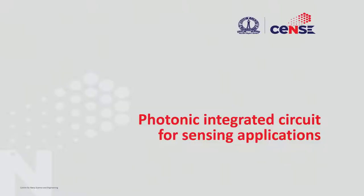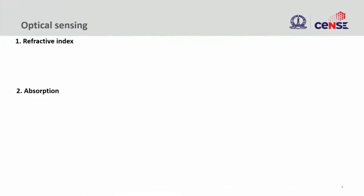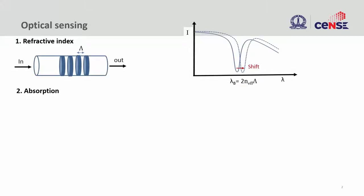We are going to look at two different things here. There are two ways: you can do refractive index sensing — that is, the change in the refractive index — and next is absorption sensing. The refractive index sensing is rather straightforward.